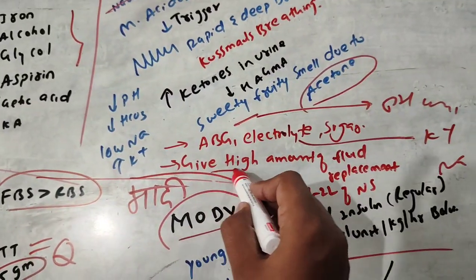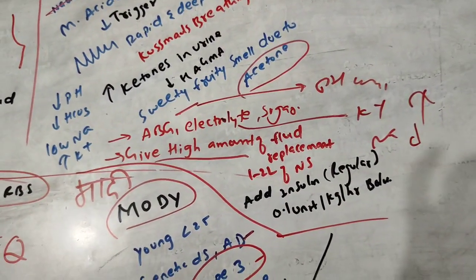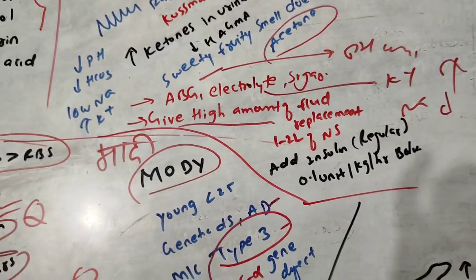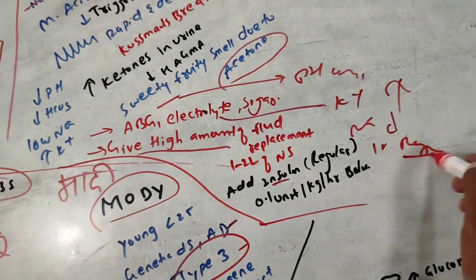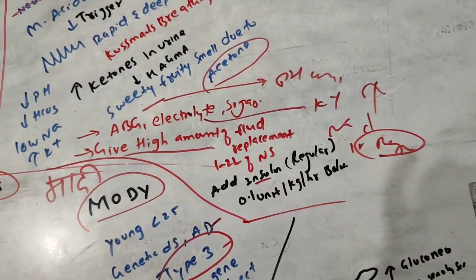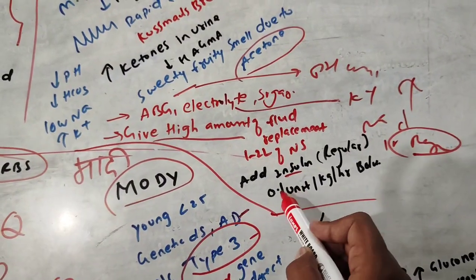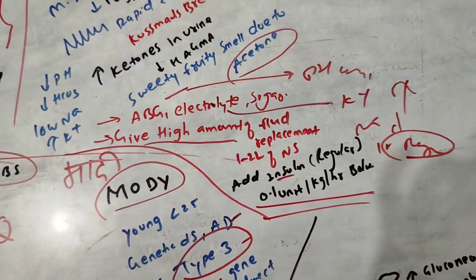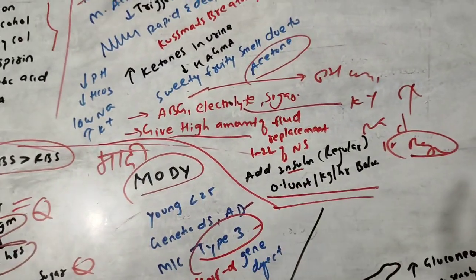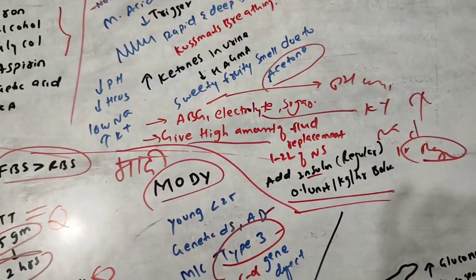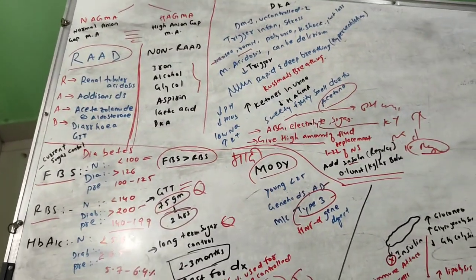After ABG and electrolyte assessment, give high-volume fluid replacement: 1 to 2 liters of normal saline. Then give regular insulin IV — regular insulin is the only type given intravenously. The dose is 0.1 units/kg/hour; for a bolus, give 0.1 units/kg. Hope this is clear — thank you very much.